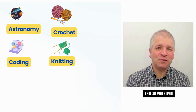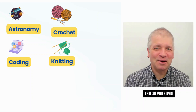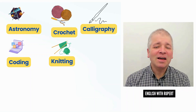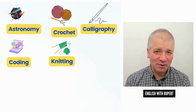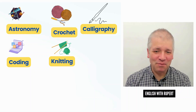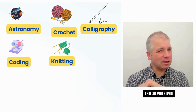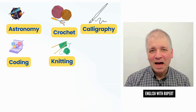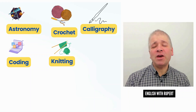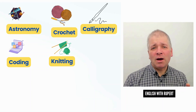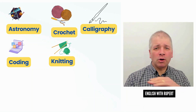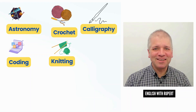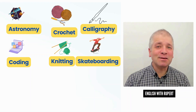What about that word for nice writing? It begins with C — it is calligraphy. Remember, calligraphy uses that special pen that makes nice patterns when you write. And finally, what about the young person who likes to play on a board with wheels and no handles? It is, of course, skateboarding.